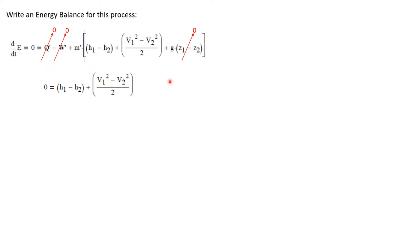So let's write an energy balance for this process. We know for any steady state process, the delta E is zero. And that is equal to Q dot minus W dot plus the mass flow rate times the change in enthalpy plus the change in kinetic energy plus the change in potential energy.